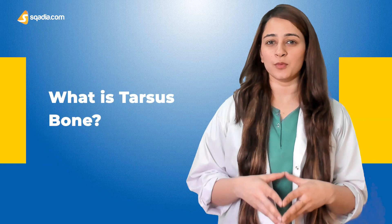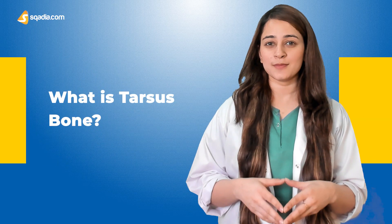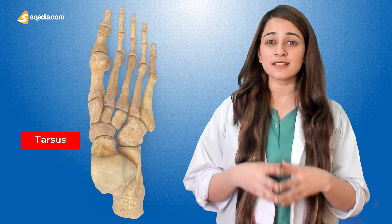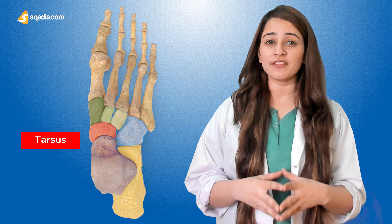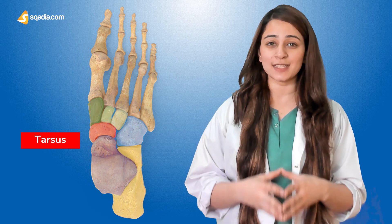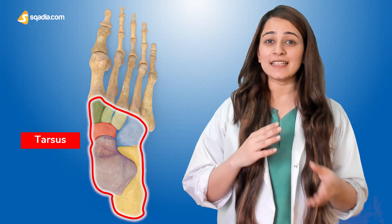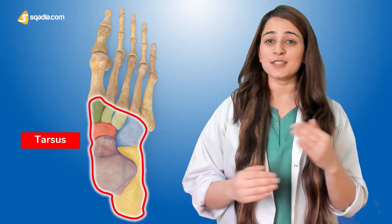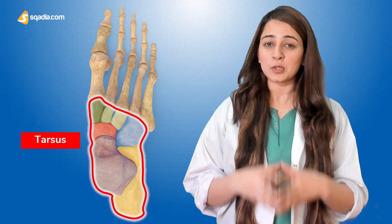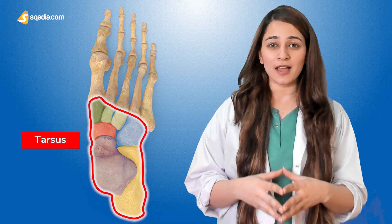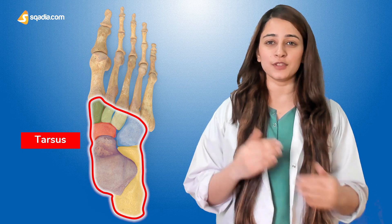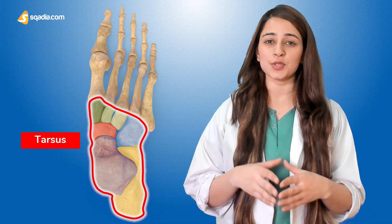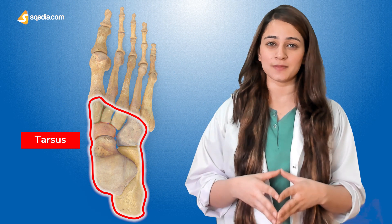What is the tarsus bone? The tarsus is a cluster of seven articulating bones in each foot, situated between the tibia and fibula of the lower leg and the metatarsus of the foot.